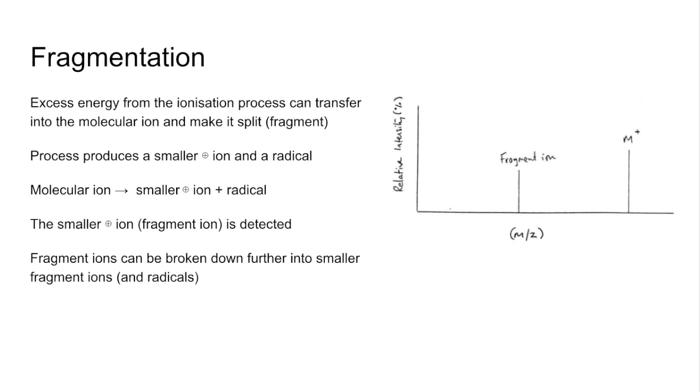So I've just amended the original spectrum to show one fragment ion. There's that original molecular ion peak. It's the peak furthest to the right with the largest M/Z value. The fragment ions are always to the left of that with smaller mass to charge ratios.